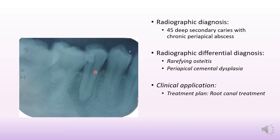This leads us to the diagnosis: the radiolucency and the caries together lead to a diagnosis of 45 having deep secondary caries with chronic periapical abscess.